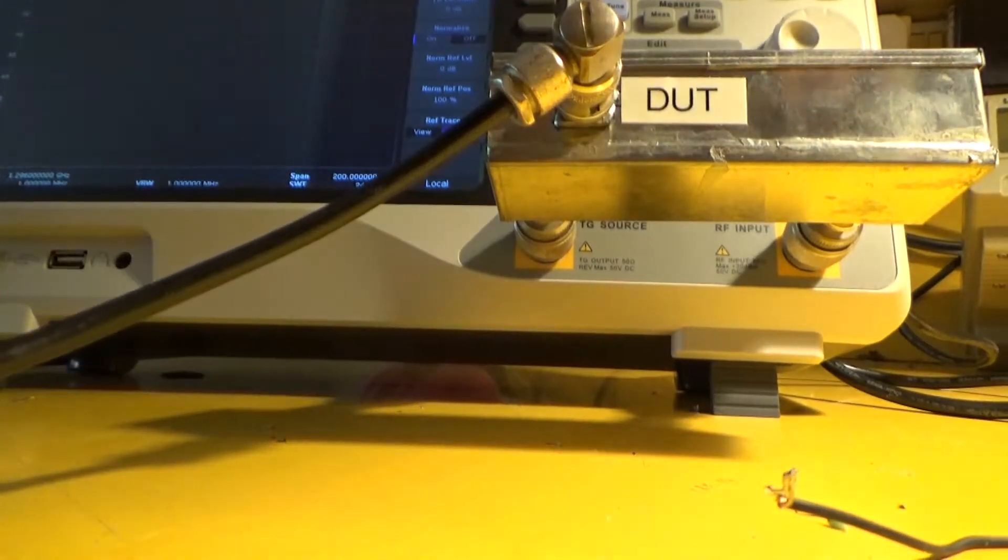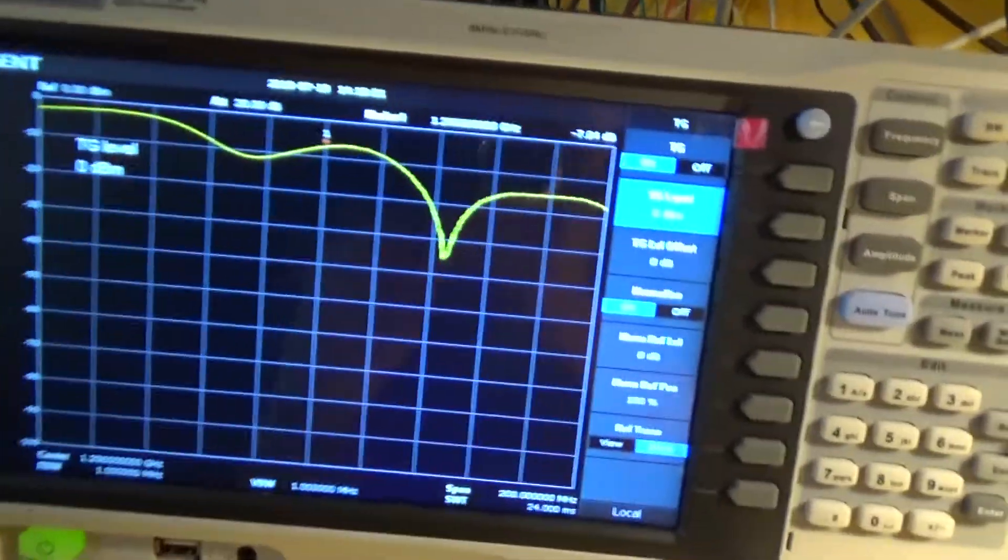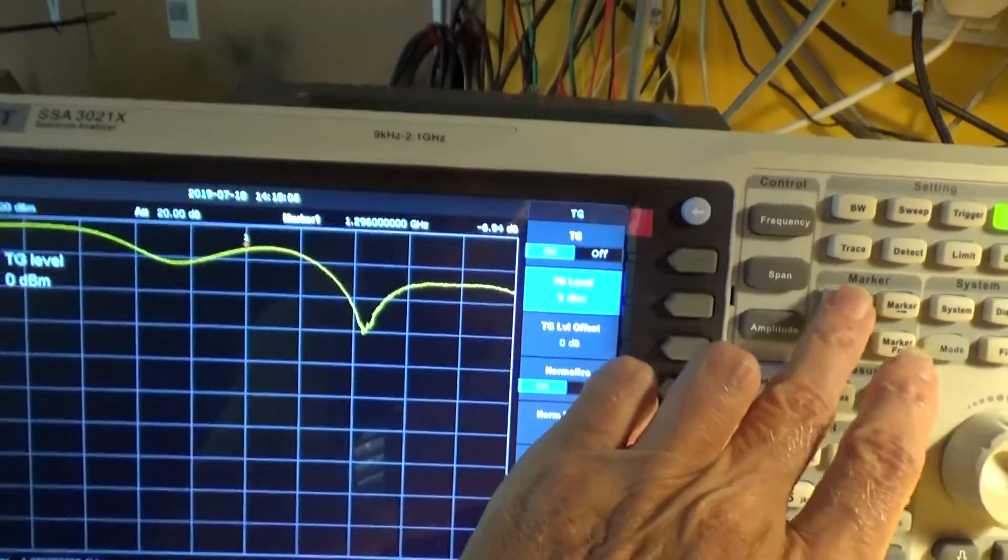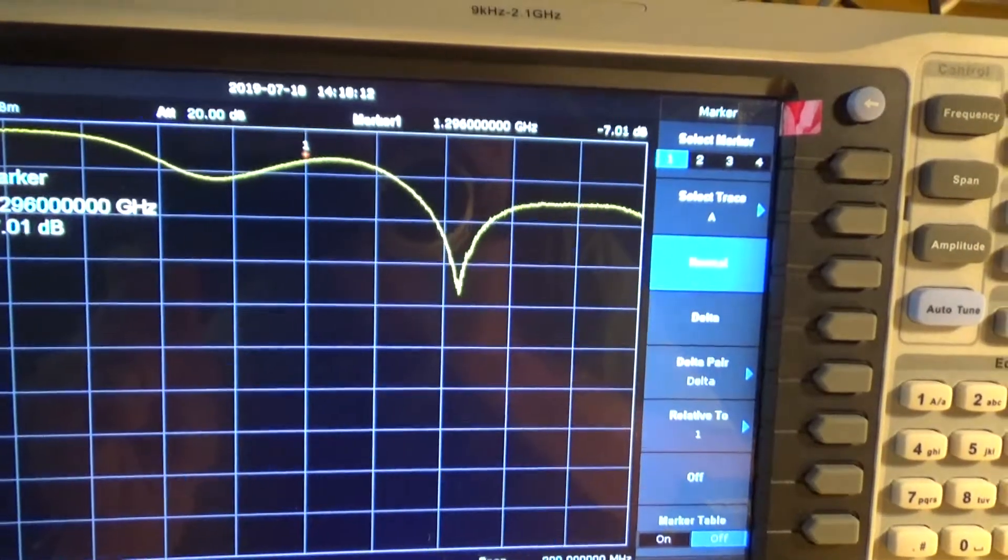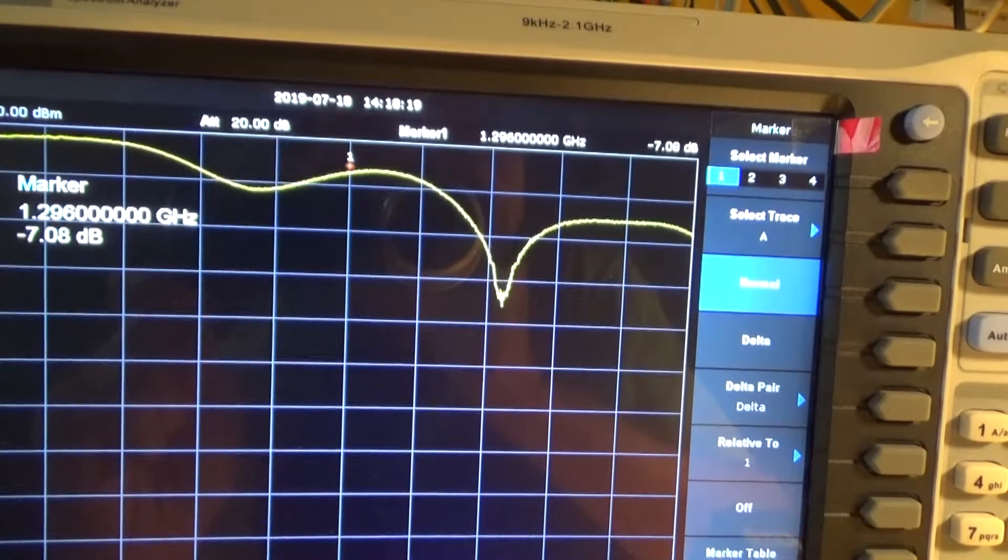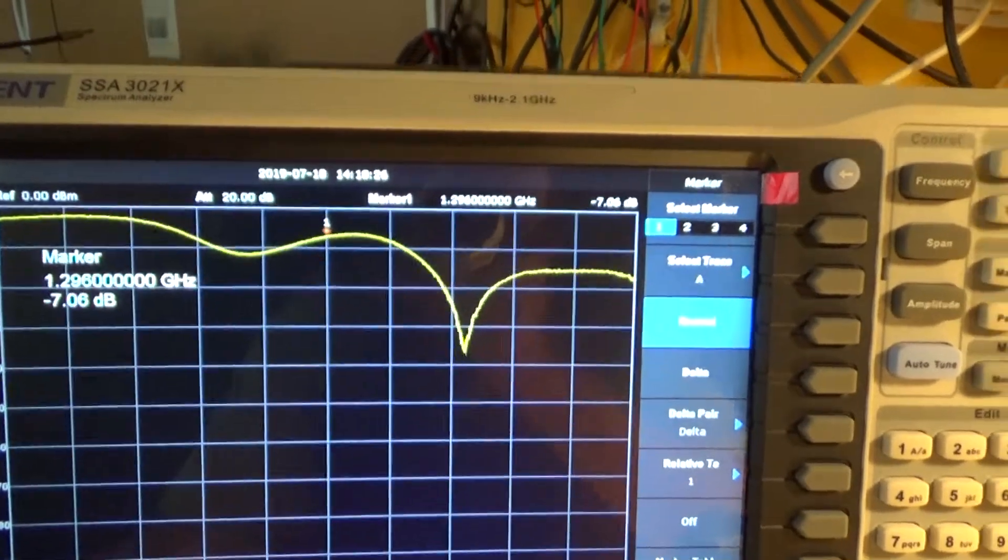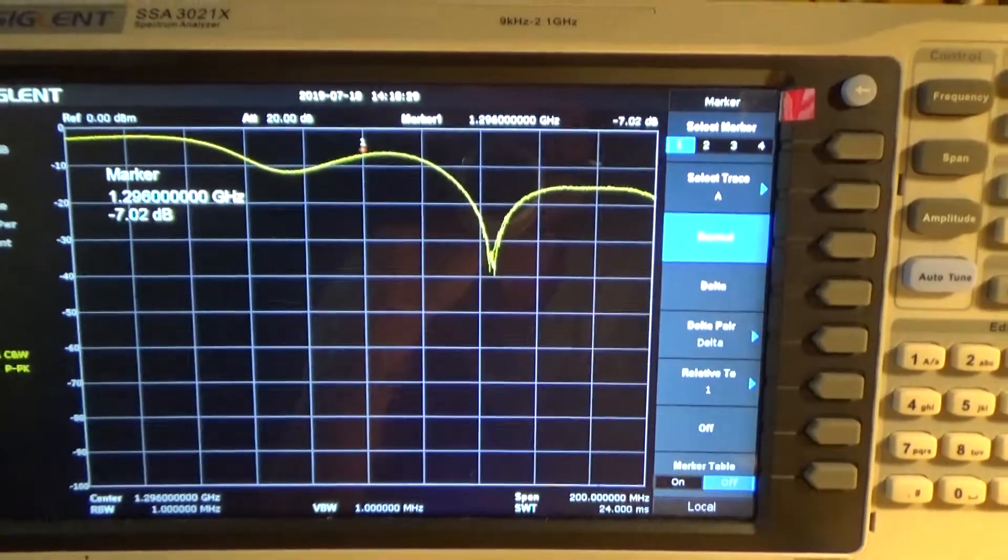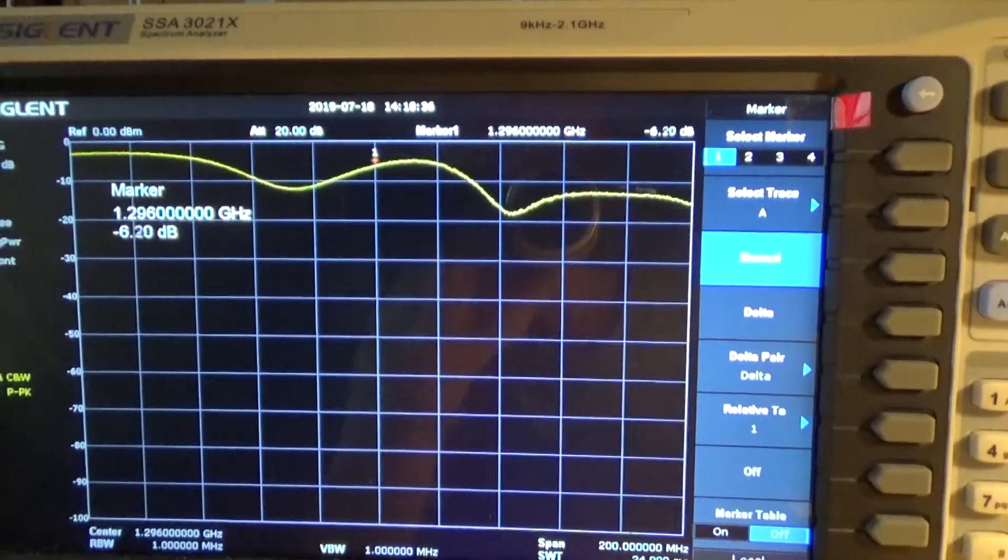I just press marker and we're looking at 1296 megahertz on the marker and we're getting a return loss of 7 dB which is not great, it's really not good. Obviously the aerial will be affected by proximity to things in this workshop. I mean if I move it around you can see the response will change quite a bit.